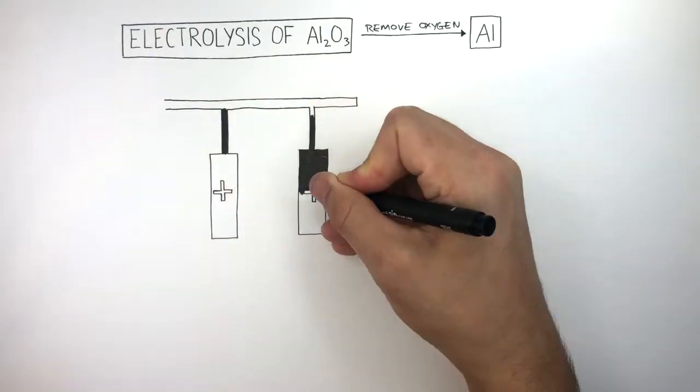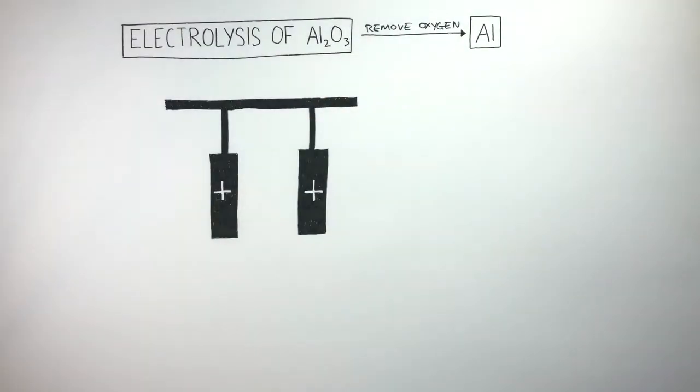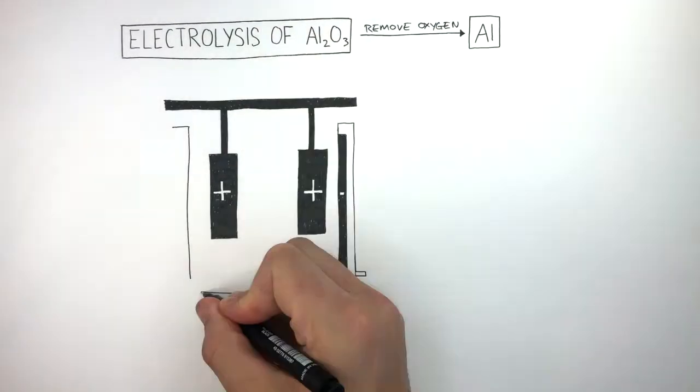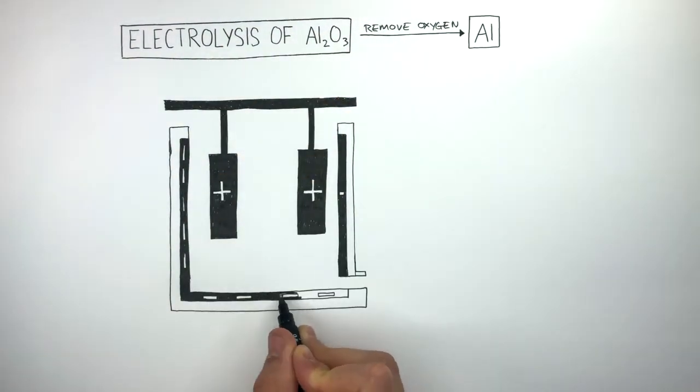Here I'm drawing the positive electrode, which is known as the anode. It is made of graphite. And here I'm drawing the negative electrode, the cathode, which is also made of graphite. This represents one cell, and it will contain the molten Aluminium Oxide, which will be electrolyzed inside.